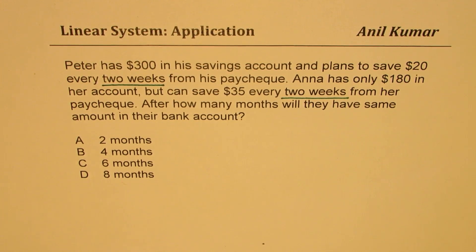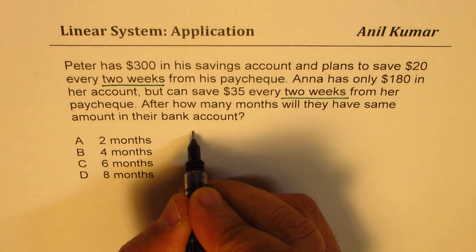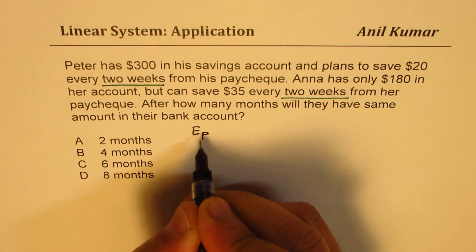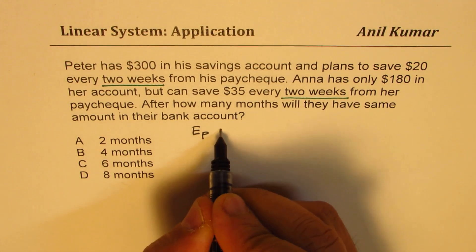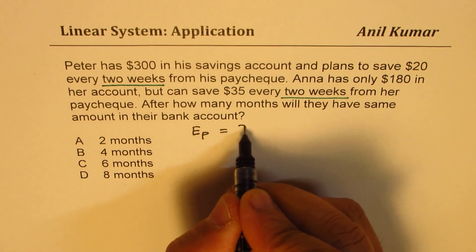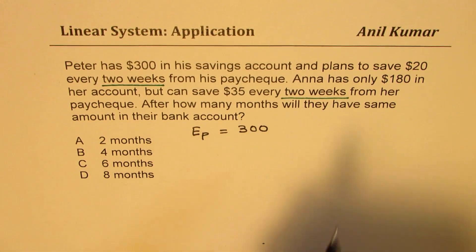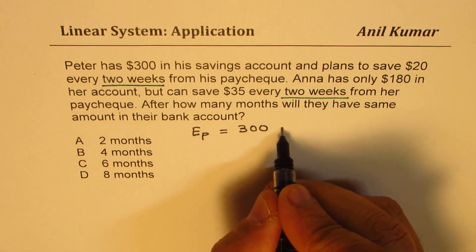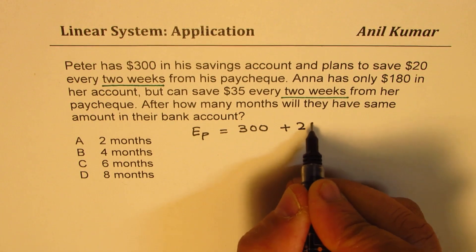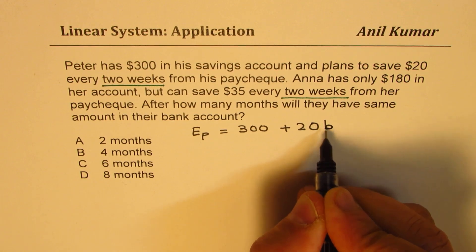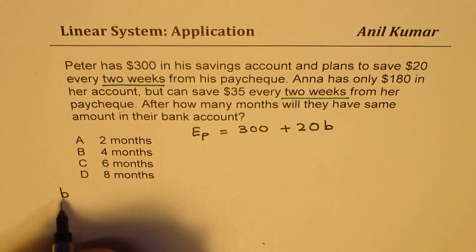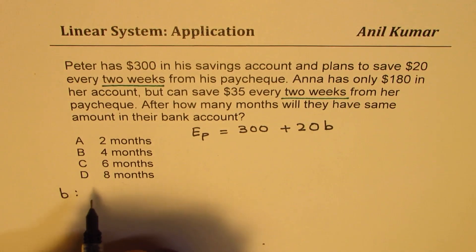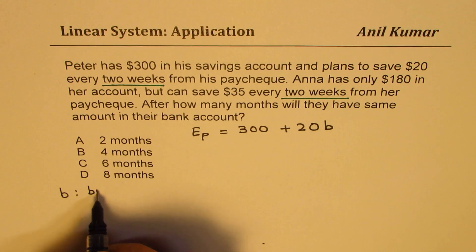What we can do here is write down the equation. For Peter's earnings — let's say EP for Peter — Peter already has $300, and what he wants to do is save $20 every two weeks, so bi-weekly. I am writing B, where B is bi-weekly, meaning every two weeks.